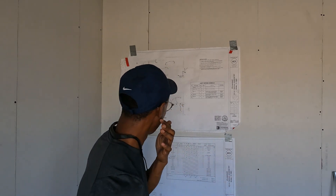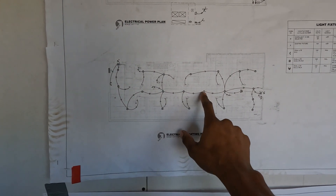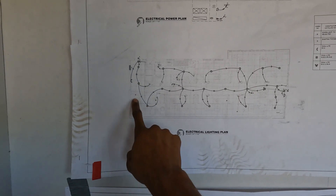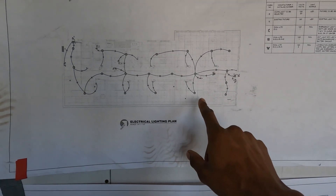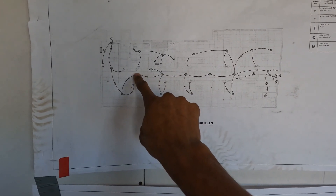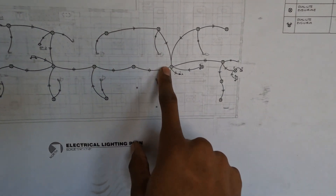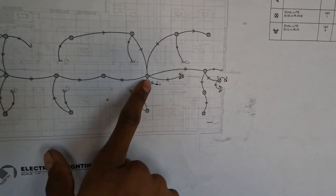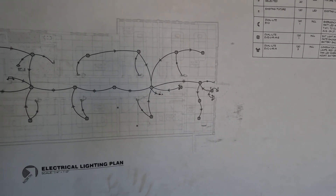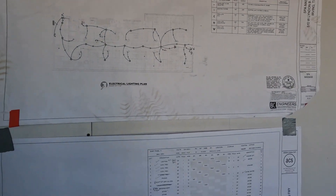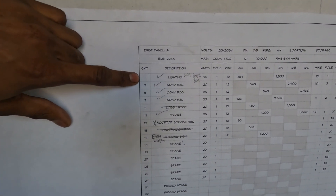So you see these are my lights — these are the rooms. If we trace back this way, we'll see an arrow right there. The arrow means home run, and that one means circuit one. So let's go down here to the panel schedule and we'll find circuit one — lighting. Simple as that.